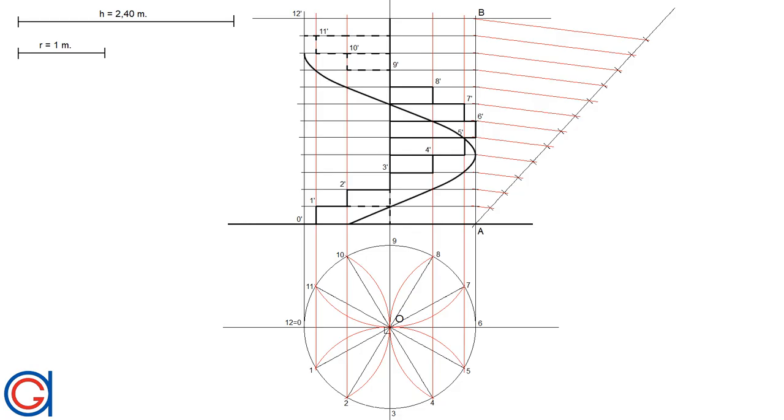And now the next step is to join these red dots using a thicker black line, which form a cylindrical helix that will be the base of each step of the spiral staircase. You can do this freehand or with the help of a French curve ruler.